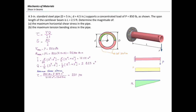The maximum shear stress in this problem is 227 PSI, and its location is at the centroid of the section.